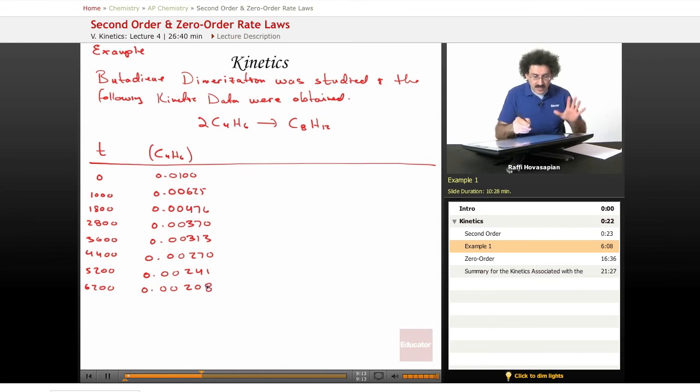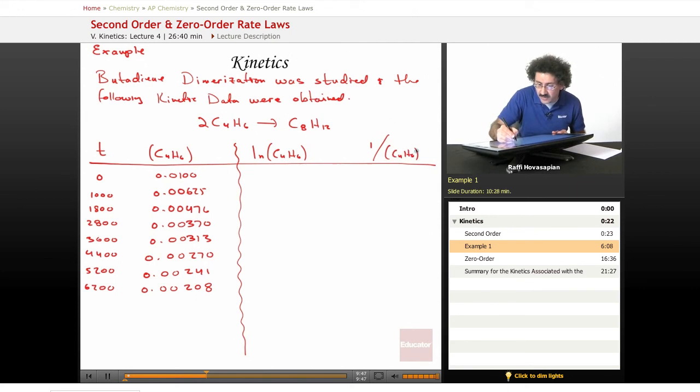Okay, given this raw data, find the order of the reaction, find the rate constant, and find the half-life based on the fact that we started with 0.0100 moles per liter of this butadiene. All right, so we need to check, is it first order or second order? We need to plot both the logarithm of C4H6 versus time and the reciprocal of C4H6 versus time to see which one gives us a straight line. If the logarithm gives us a straight line, it's first order. If the reciprocal gives us a straight line, it's second order.